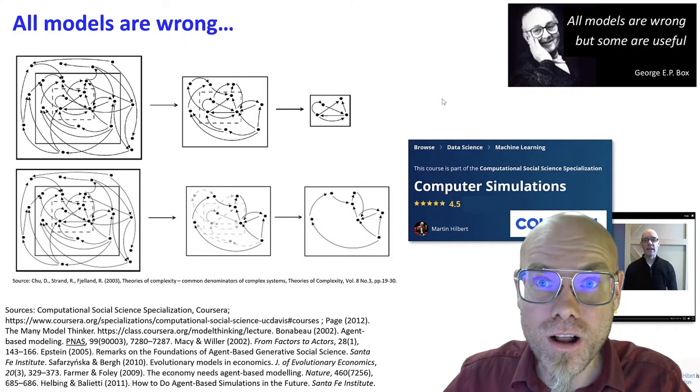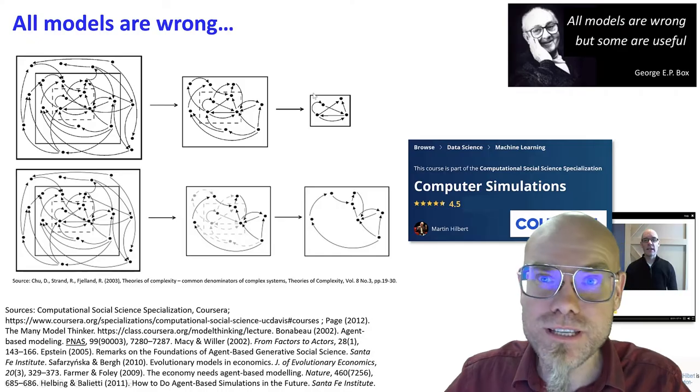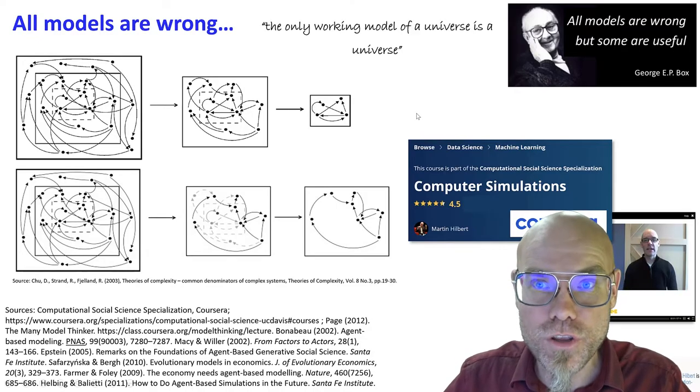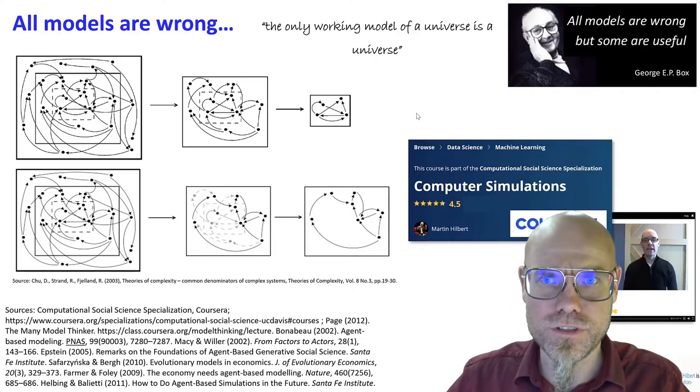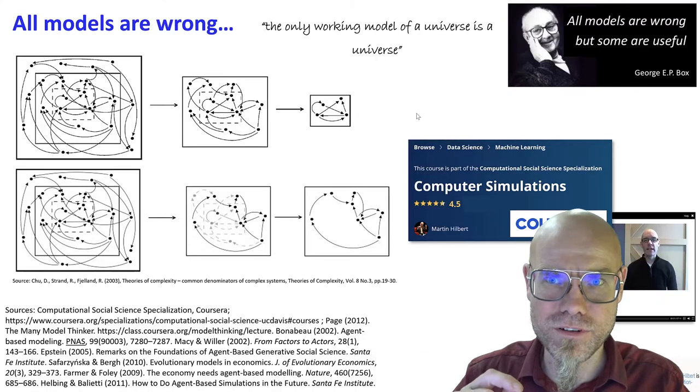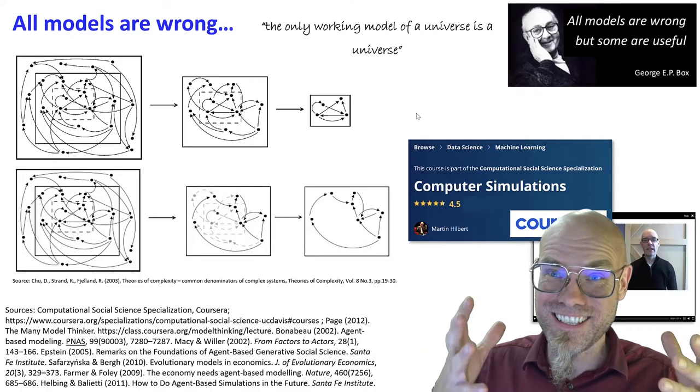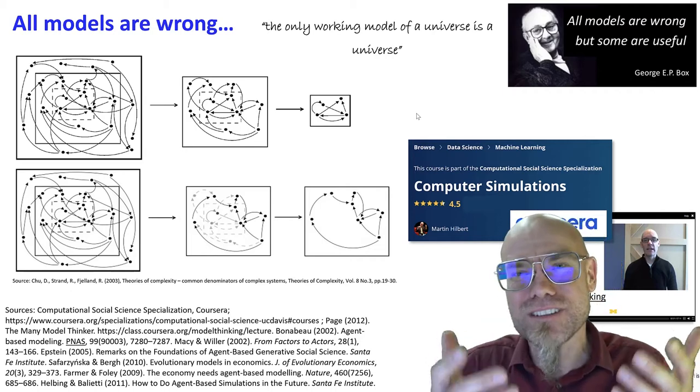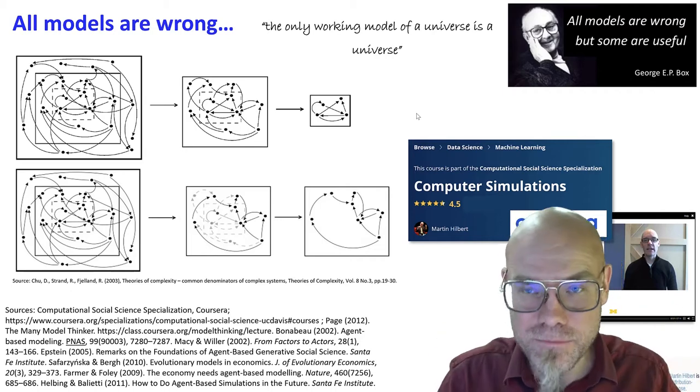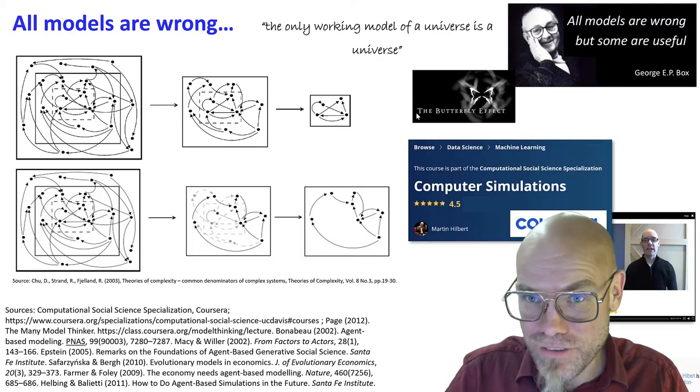But back to here, all models are wrong. Why? Because none of them represents reality really, because the only working model of the universe is a universe. In this case, it would be this universe, but it's extremely inconvenient to have a universe on your desk. That's why we simplify and we don't include everything. We only include what really interests us. And then we make it really simple. And then we have a model.